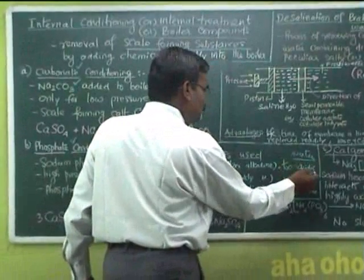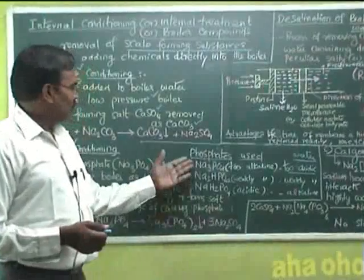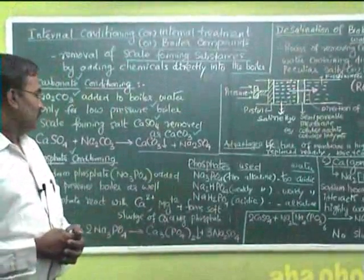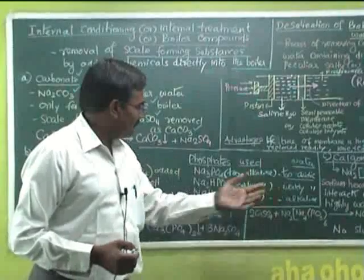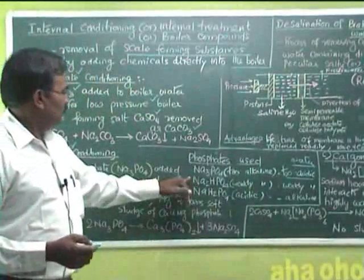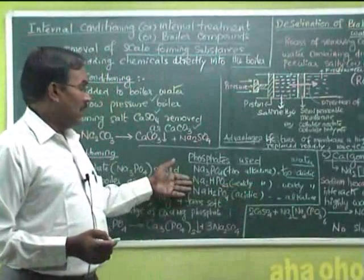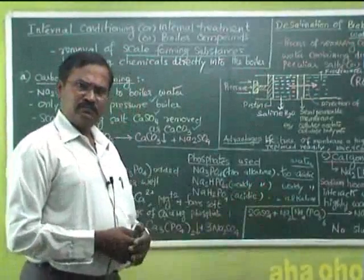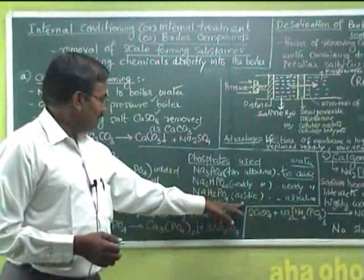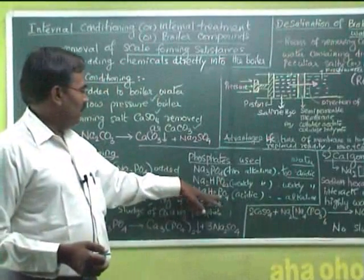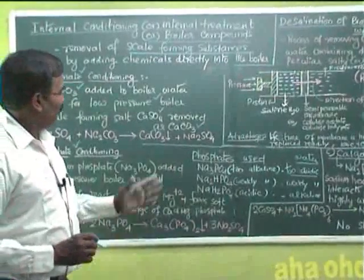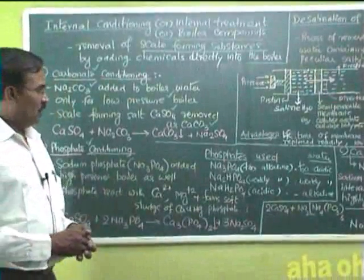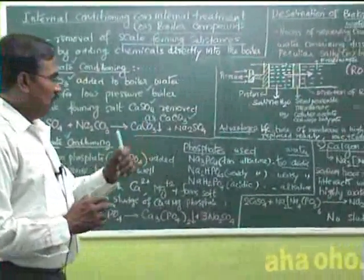Any one of these three can be added according to the nature of the water. If the water is too acidic, we prefer the alkaline phosphate compound sodium phosphate. If the water is weakly acidic, we prefer the weakly alkaline di-sodium hydrogen phosphate. So according to the nature of the water, we can prefer the appropriate phosphate — that is the advantage of this technique.